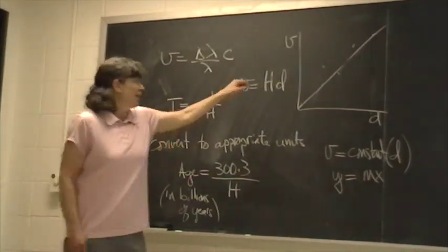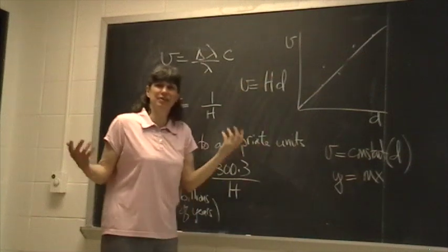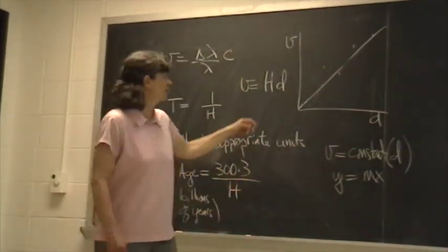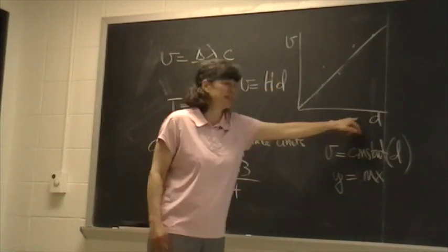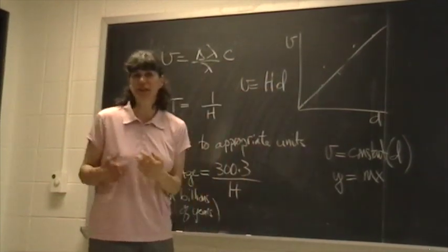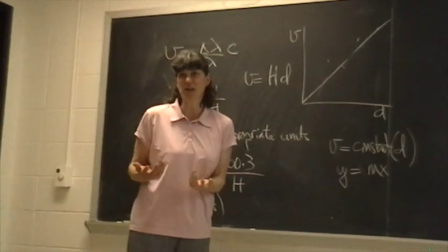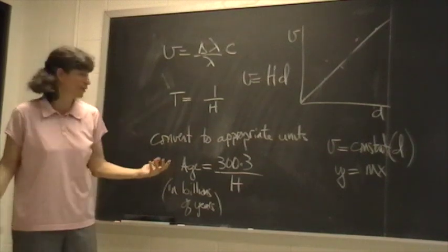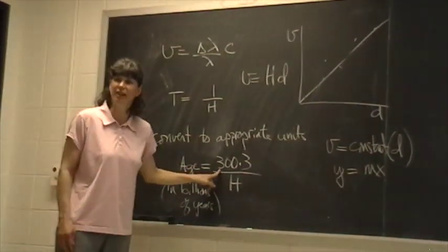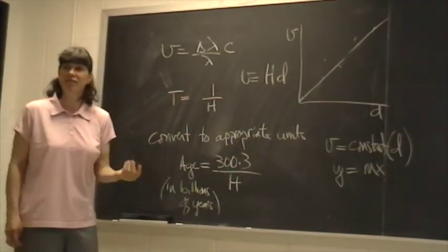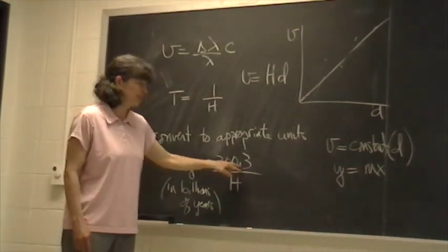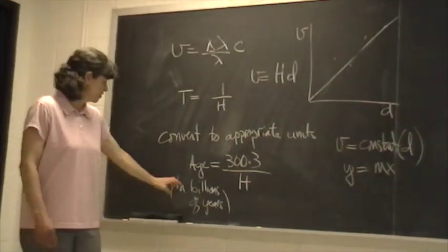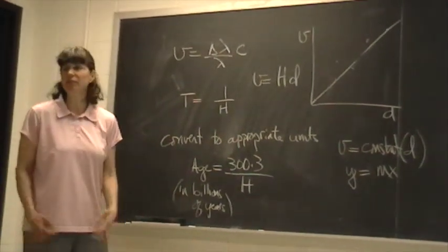That's quite easy. We measured the speed in kilometers per second, and we measured the distance in light years. If we had measured the speed in kilometers per second and the distance in kilometers, we wouldn't have to have this odd equation. But because we measured the distance and the speed in different units, we need a conversion factor. To find the age of the universe, all you do is you take 300.3 divided by the value of this Hubble constant, and you will get the age of the universe in billions of light years.